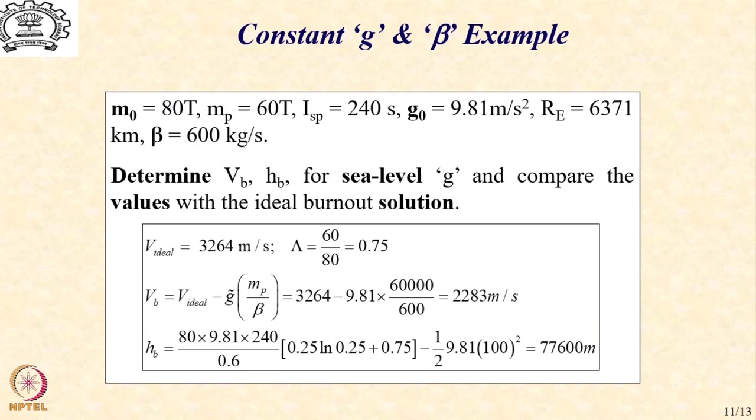Now, obviously, a point is to be noted here. We have started this calculation by assuming that the gravity value throughout this trajectory is corresponding to sea level. But when we arrive at the solution, we find that the rocket actually at the end of the trajectory or the burnout will be at around 78 km altitude. So, obviously, the gravity value we are using may not be the value that will be actually applicable at this altitude and that we may need to correct our gravity value.